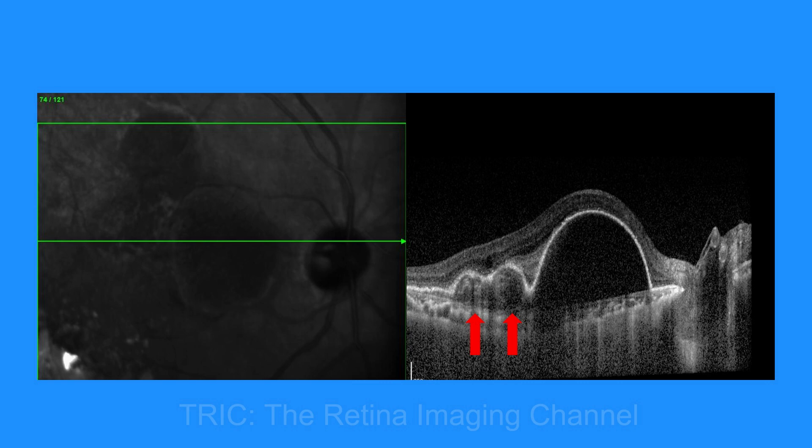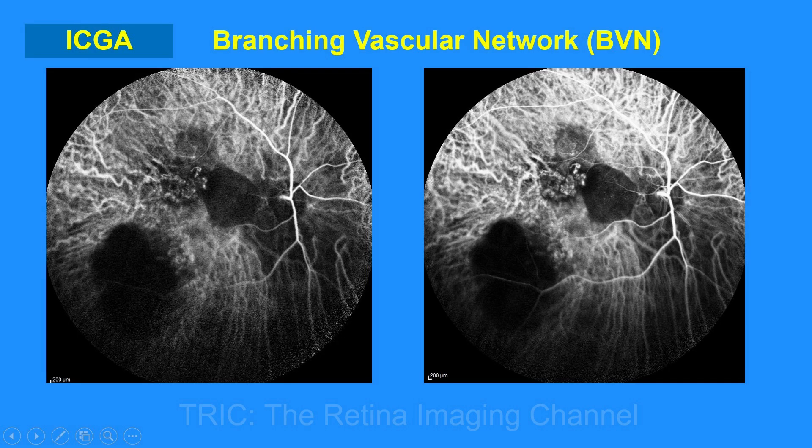When we did an ICG of this patient, we saw branching vascular networks in the areas of RPE undulations and thumb-like PEDs. The RPE undulations were caused by blood vessels which are part of the branching vascular network, as shown here.